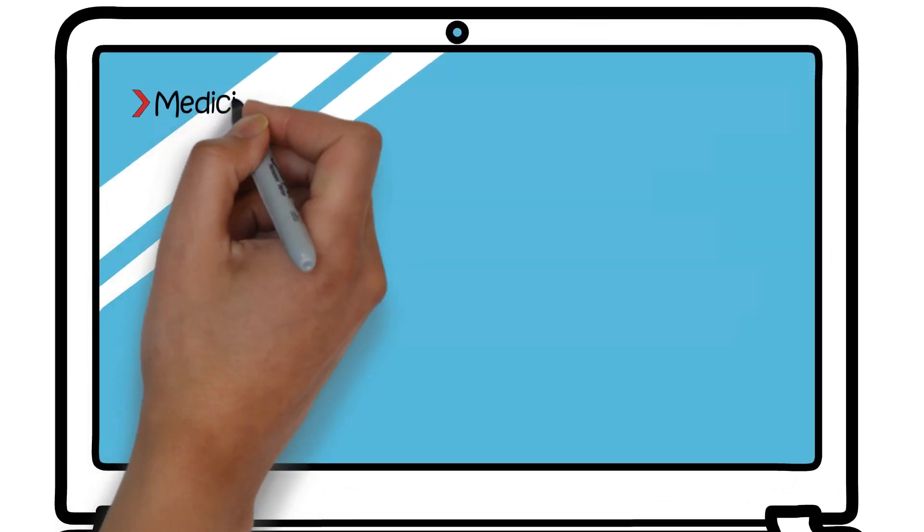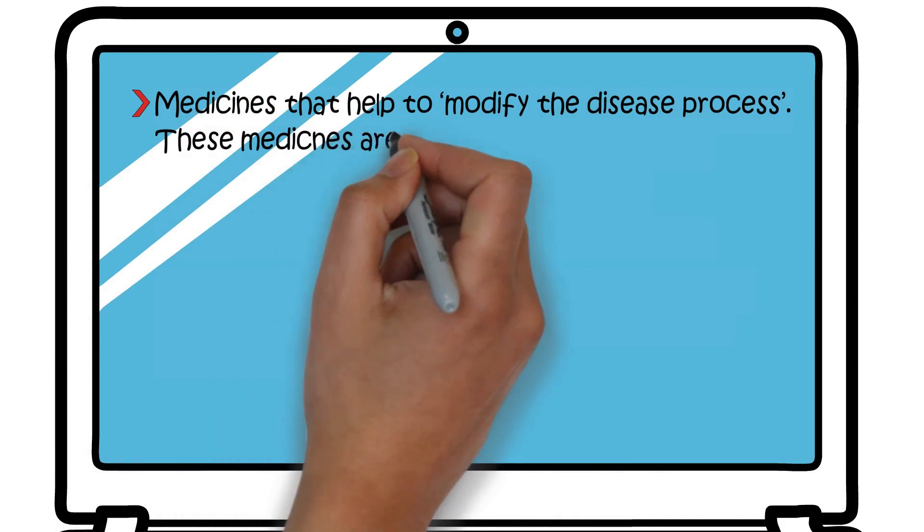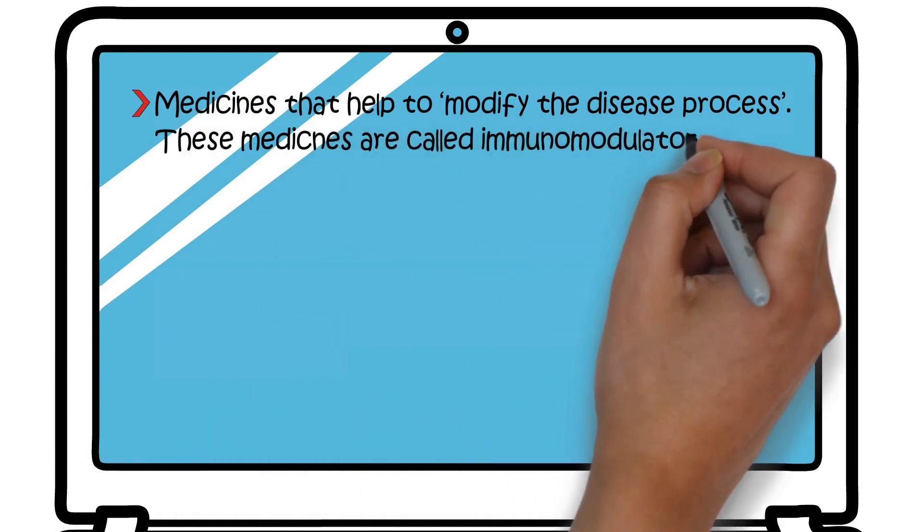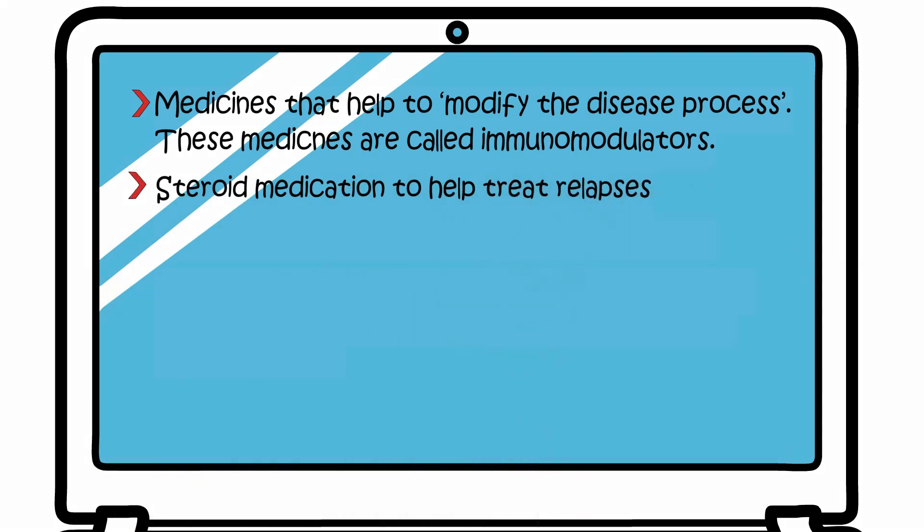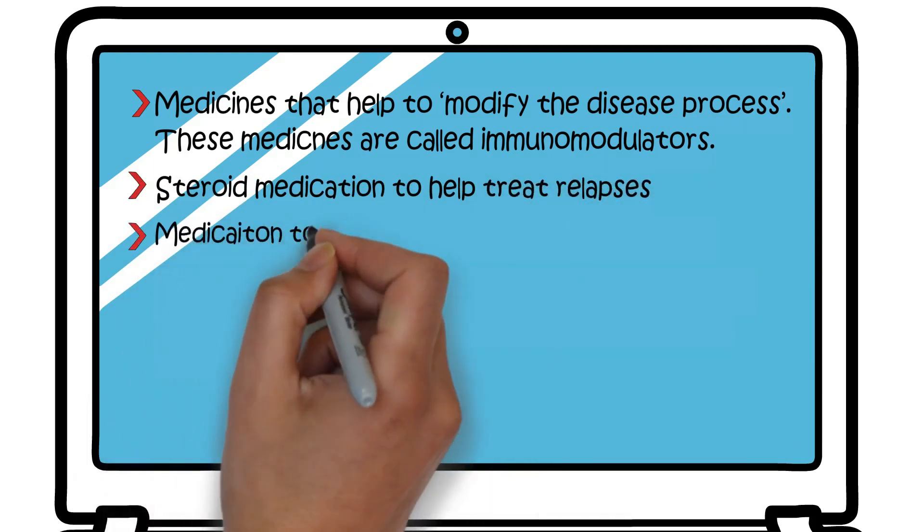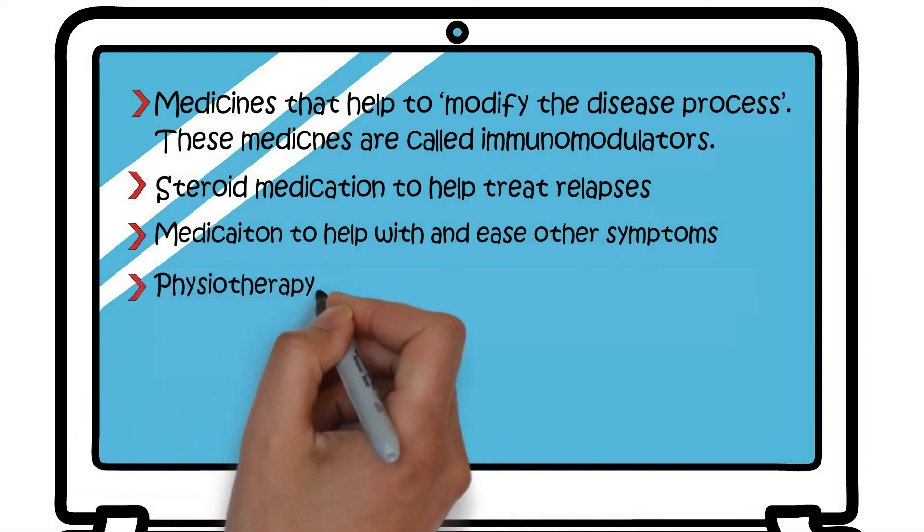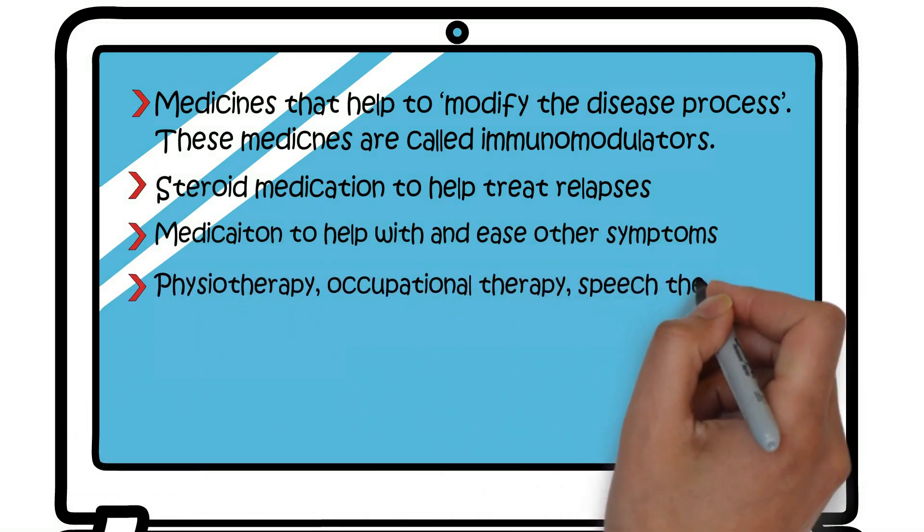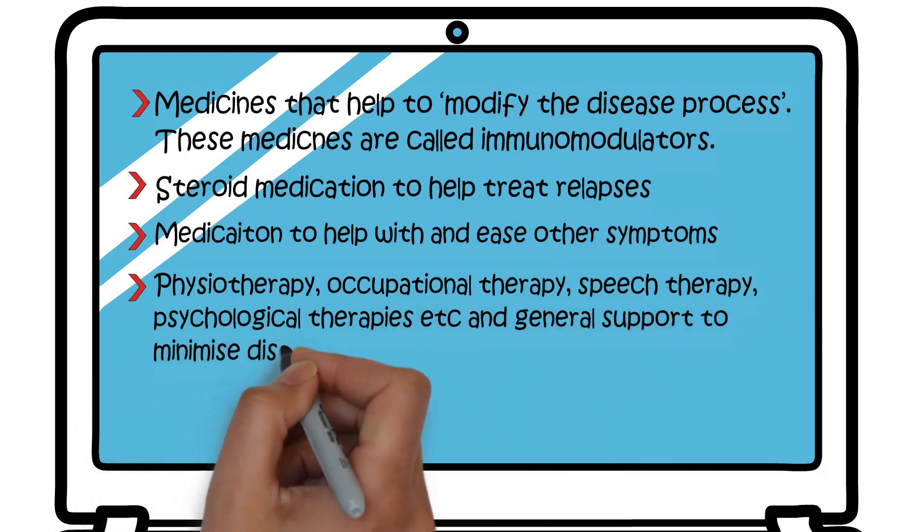1. Medicines that help to modify the disease process. These medicines are called immunomodulators. 2. Steroid medication to help treat relapses. 3. Medication to help with and ease other symptoms. 4. Physiotherapy, occupational therapy, speech therapy, psychological therapies etc. and general support to minimize disability.